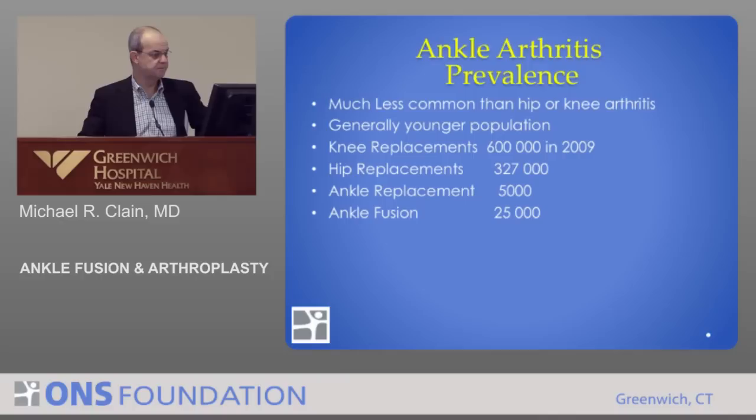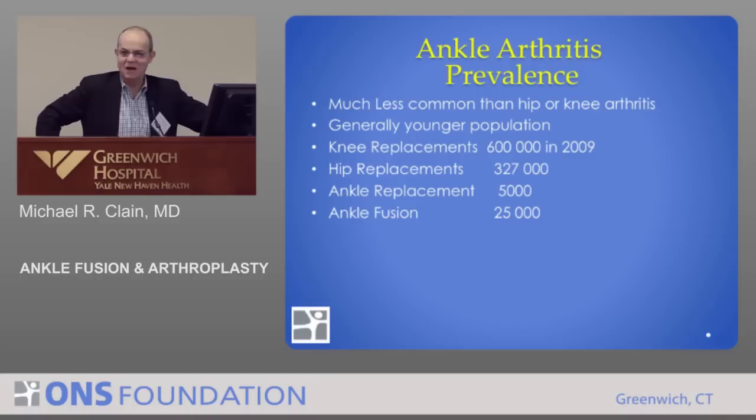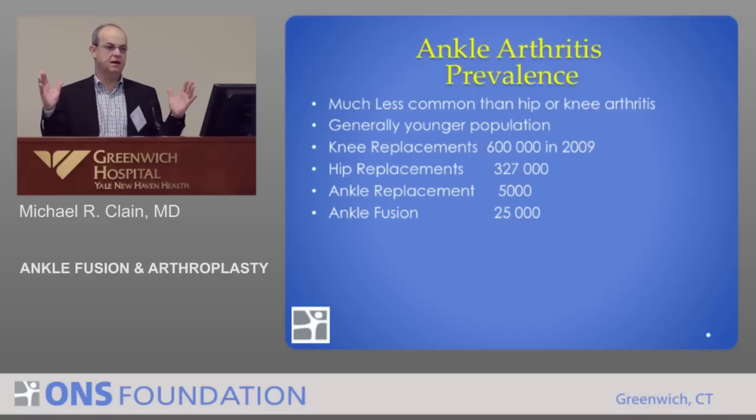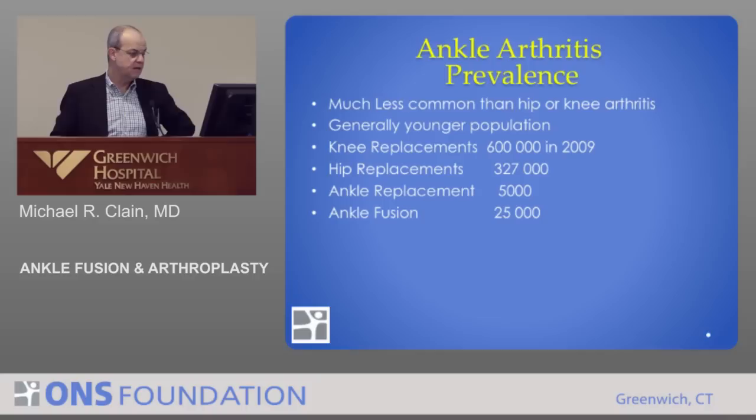This feeds into why don't we do ankle replacements on everybody. The prevalence of ankle arthritis is much less common than hips and knees for some reason. The cohort of patients with ankle arthritis compared to hips and knees is a much younger group because a lot of them are post-traumatic and post-instability.